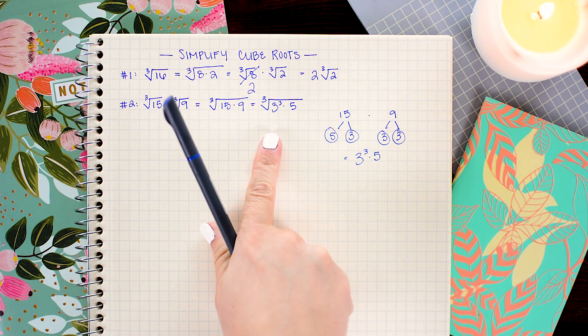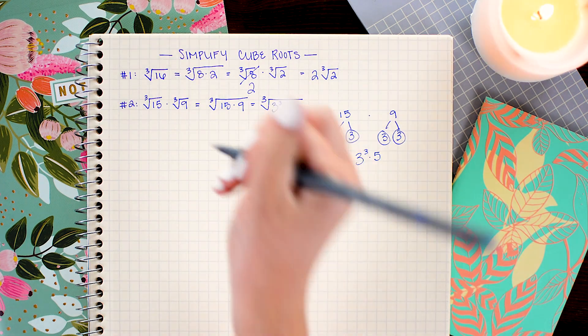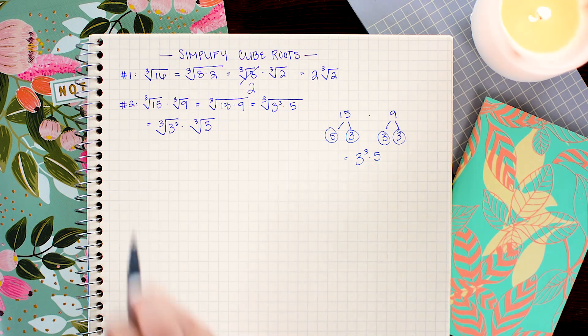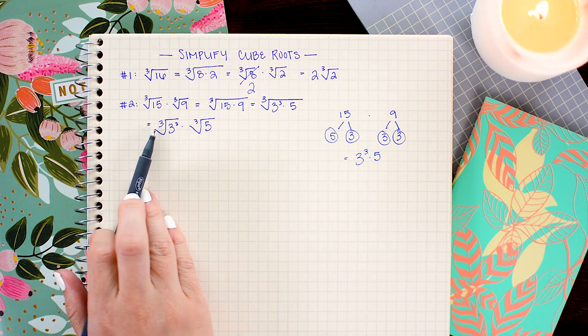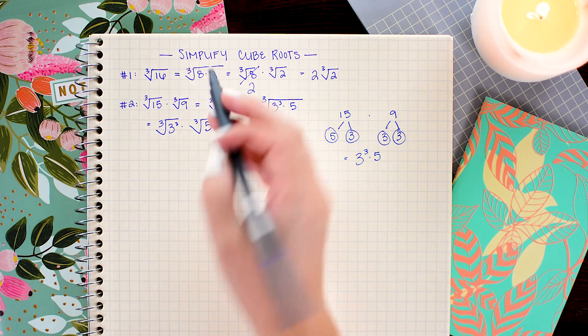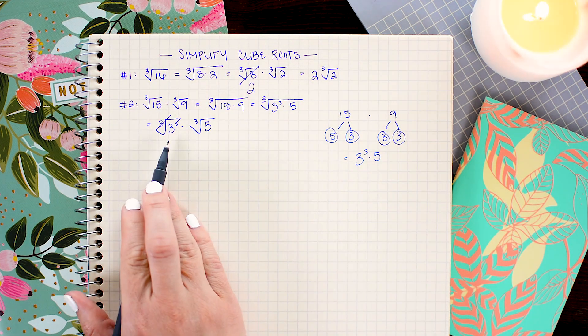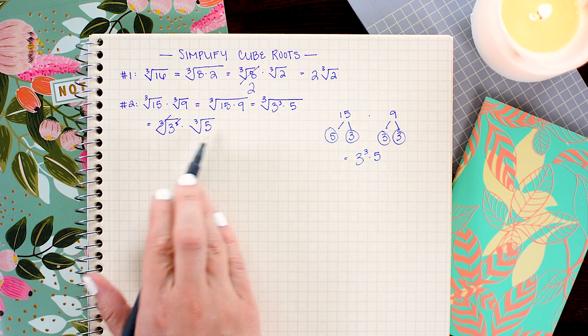Like in the last problem, I'm going to split this apart into two separate roots. And lastly, the cube and the cube root cancel each other out. So I'm just left with 3 on the outside. So my answer will be 3 cube root 5.